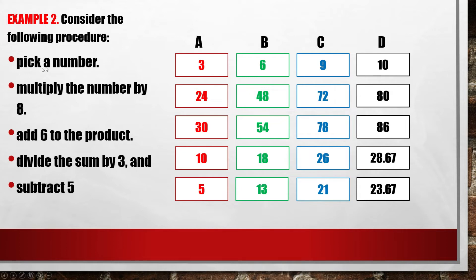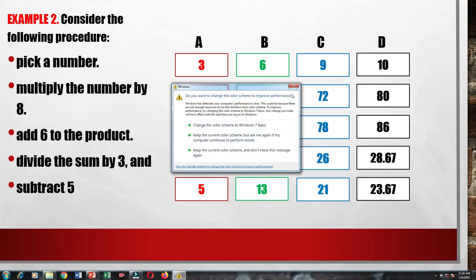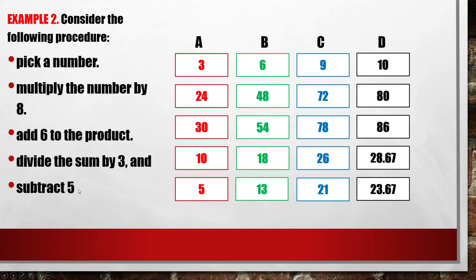For another example, consider the following procedure: pick a number. If I choose 3, multiply by 8 to get 24, add 6 to get 30, divide the sum by 3 to get 10, then subtract 5 to get 5. If you do that with all numbers here you can get your own answer.